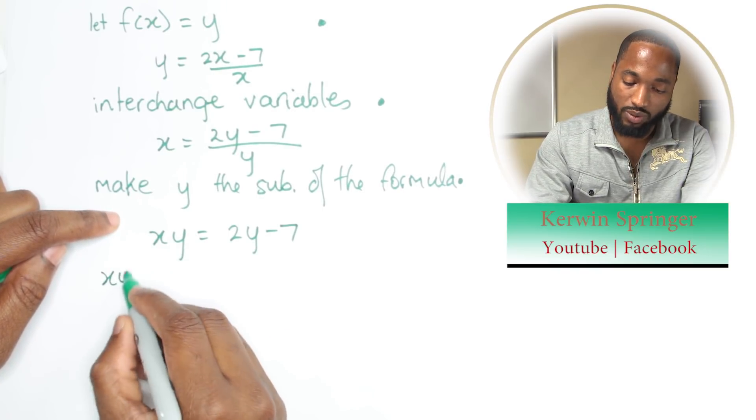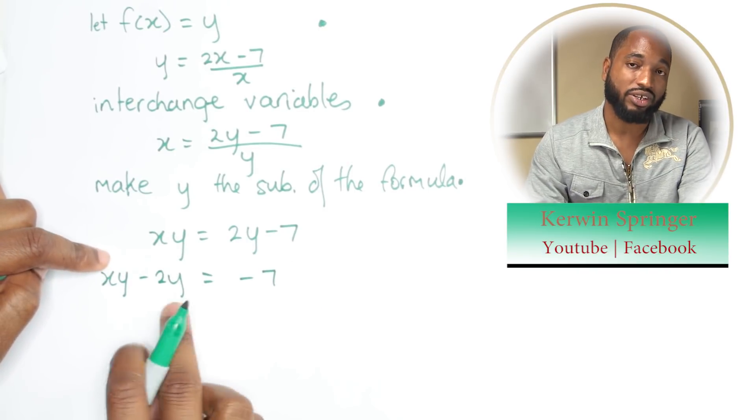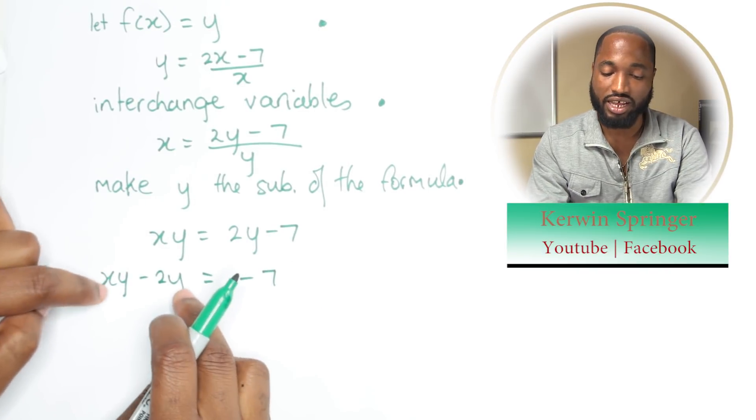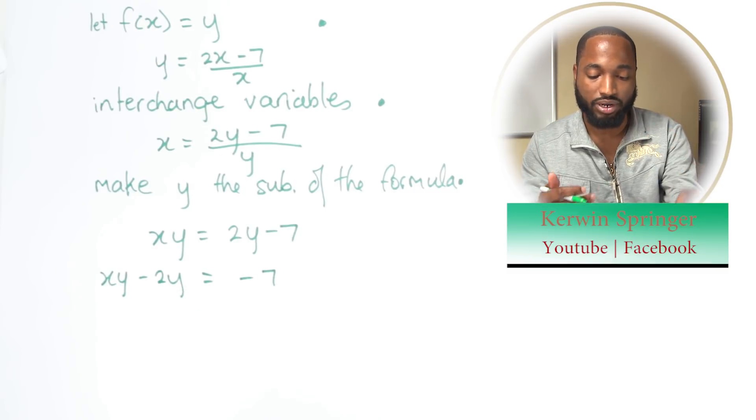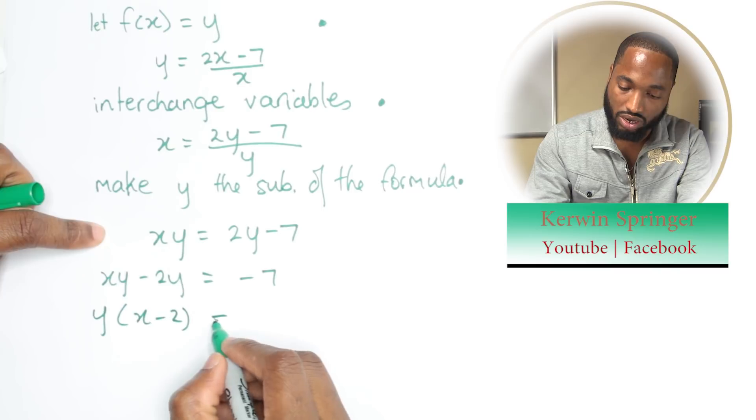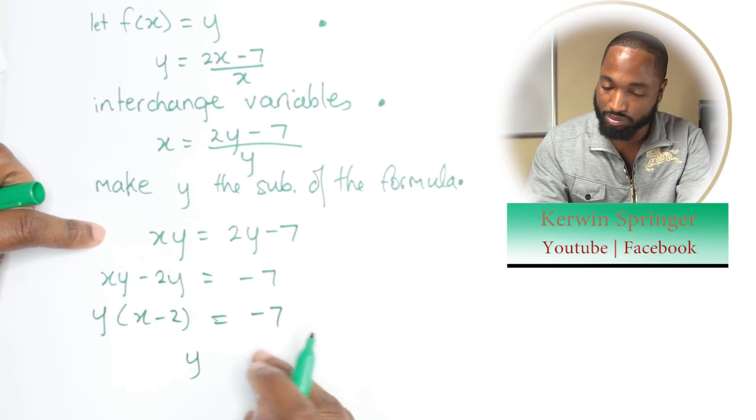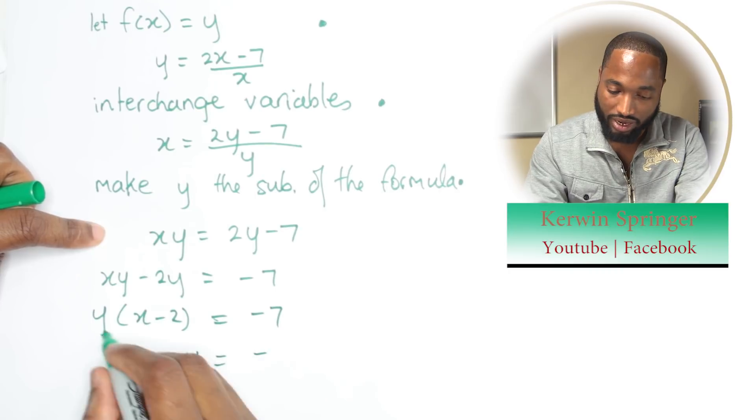So it'll be xy take away 2y is equal to negative 7. Now we can factorize out the y. Two y's are standing next to each other, we can pull him out: y(x - 2) equal that same negative 7. And we can now bring down this bracket by dividing, so it's gonna divide. y = -7/(x - 2). That bracket was totally unnecessary.